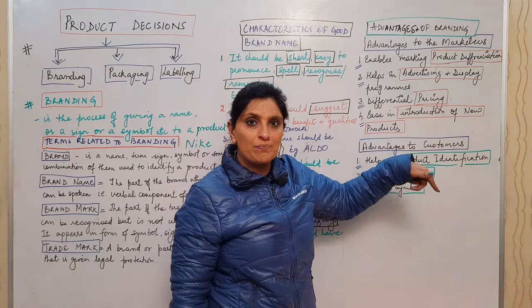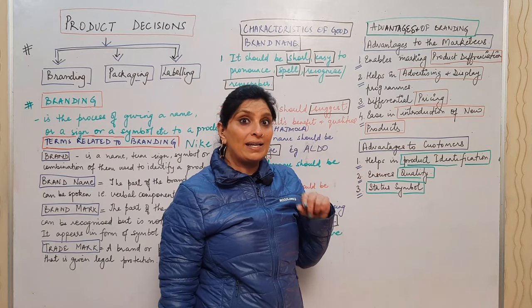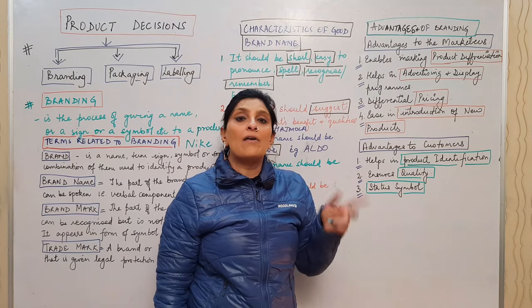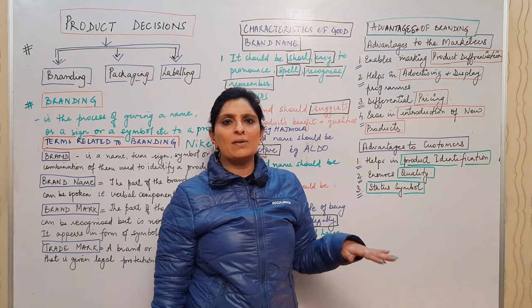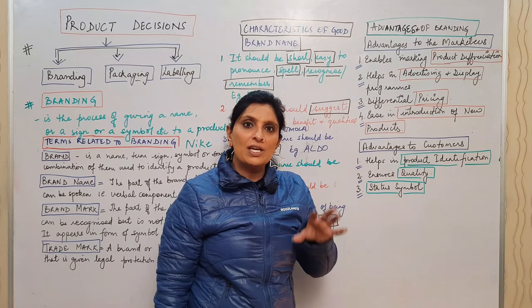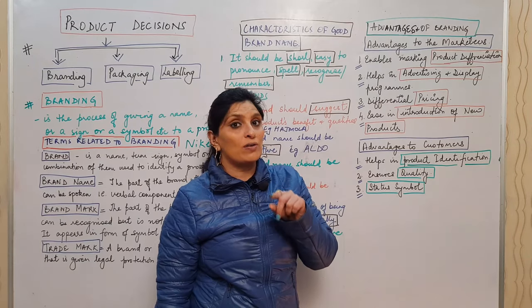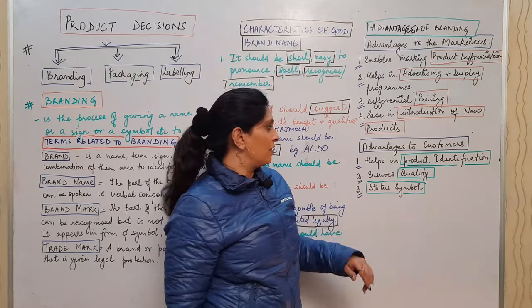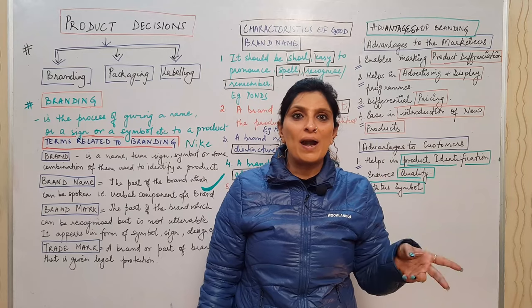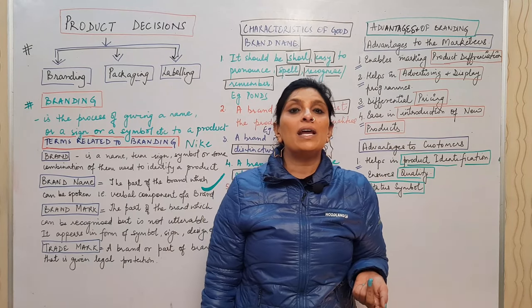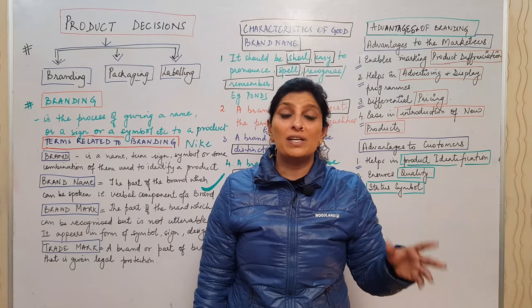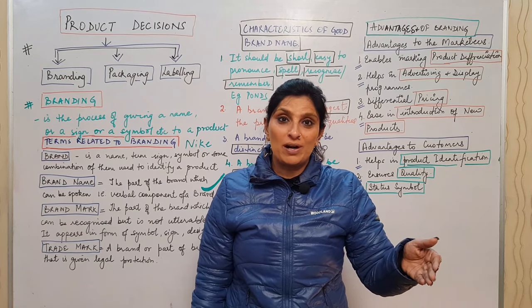Differential pricing is another advantage of branding. Louis Vuitton costs more than an Aldo bag; Nike products are more expensive than local sports goods. Brand name creates a pricing difference. In the introduction of a new product, an established brand name helps — people buy immediately. If the brand is not established, you need to offer incentives like buy-one-get-one-free to encourage purchase. So brand name makes a real difference.